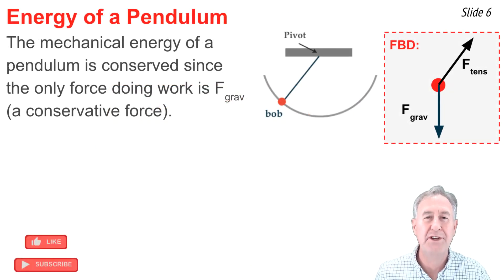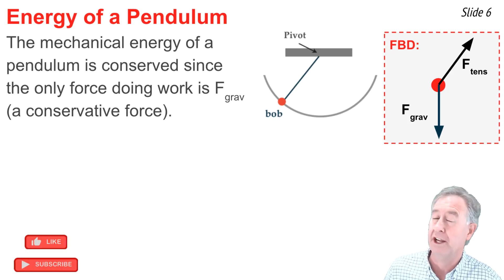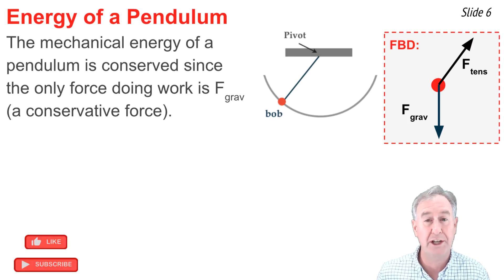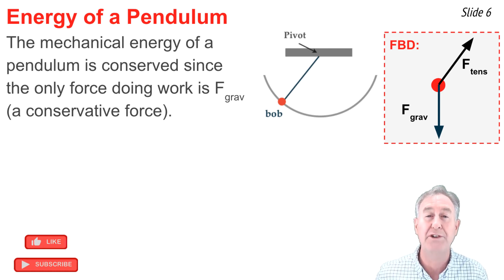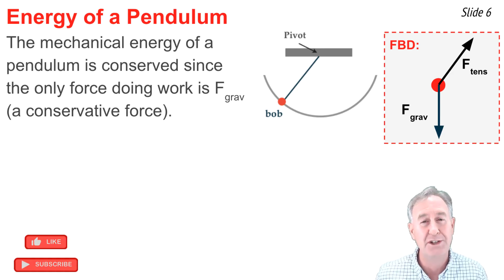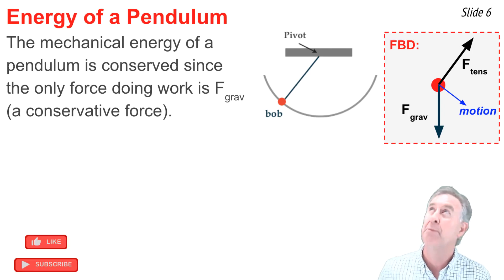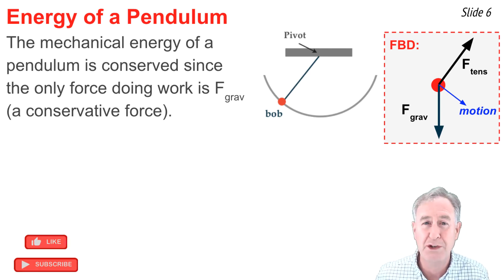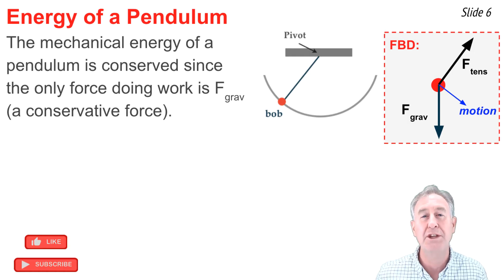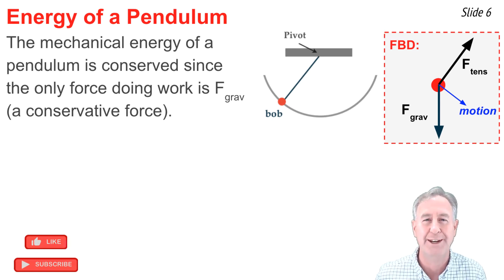The motion of a pendulum provides another example of mechanical energy conservation. A pendulum is a small object known as a bob, attached by a string to a fixed point. As the bob moves along its circular arc, there are always two forces acting upon it: the force of gravity acting downwards, and the tension force acting along the direction of the string. Tension is a non-conservative force, but it does not do work upon the pendulum bob, because the force of tension is always directed perpendicular to the motion of the bob. Such forces cannot do work when the angle between the force and the direction of motion is 90 degrees. So the only force doing work upon the pendulum is the force of gravity, a conservative force, and thus mechanical energy is conserved.